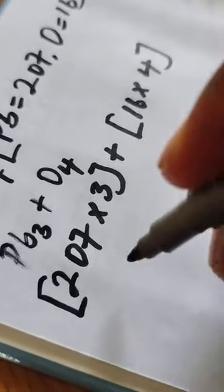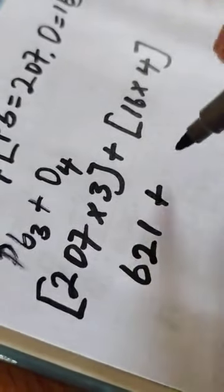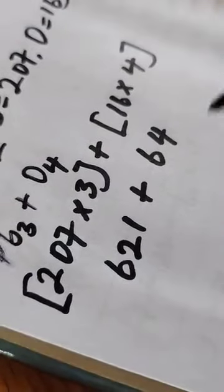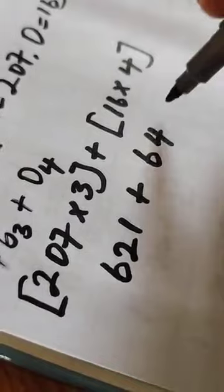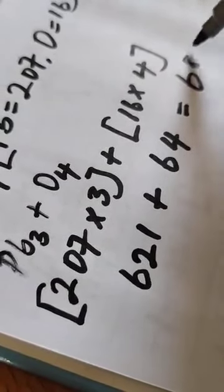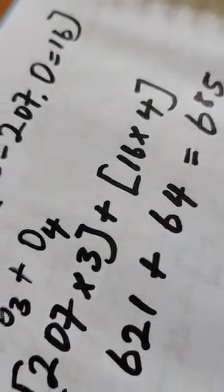So if we do that, this will give us 621 plus 64. The relative molecular mass of the compound is simply 685.